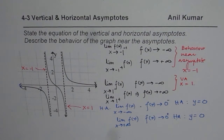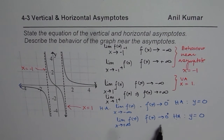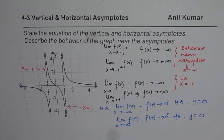That is how you need to understand horizontal and vertical asymptotes, and how you can describe the behavior of the graph near the asymptotes. I hope that is clear, and now with that, let's take up some questions from the book. Thank you and all the best.